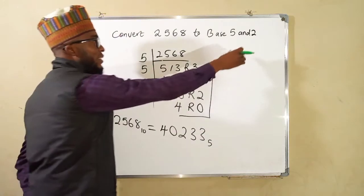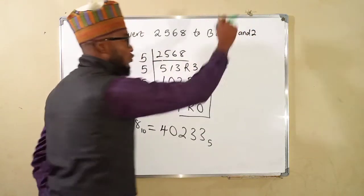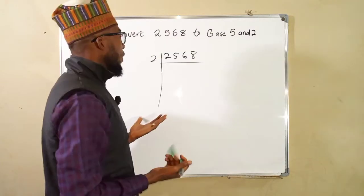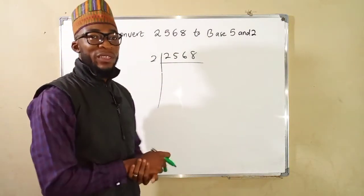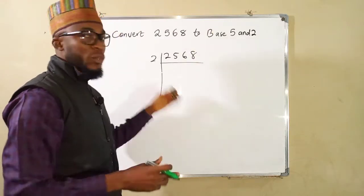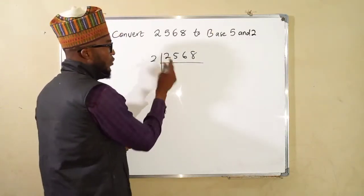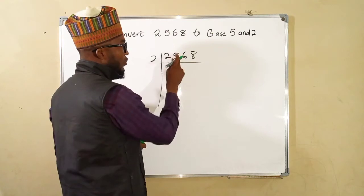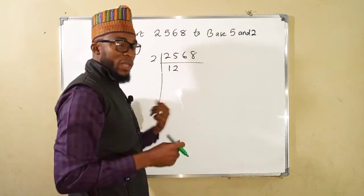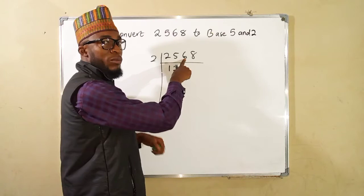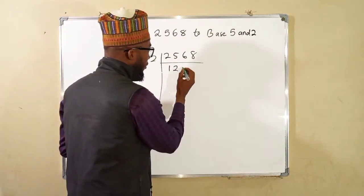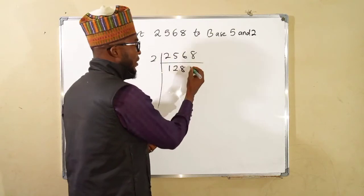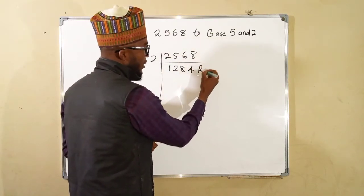So now let us see how we can convert it to base 2. Dividing numbers by 2 is the most simplest division so we can even do it without calculator. 2 can go into 2 once, 2 can go into 5 two times but we have a remainder of 1. Take that one to the next number it becomes 16, 2 can go into 16 eight times, 2 can go into 8 four times so we do not have any remainder.